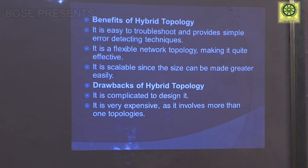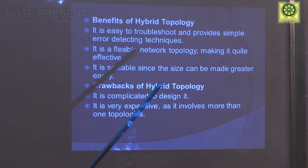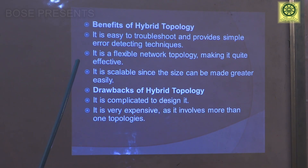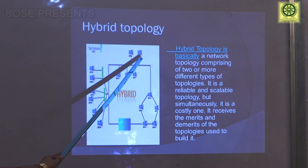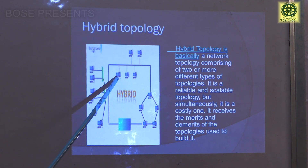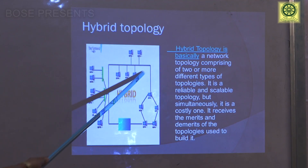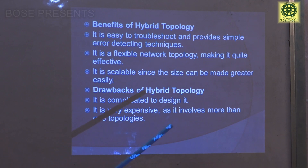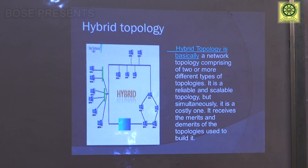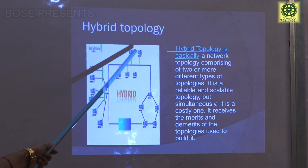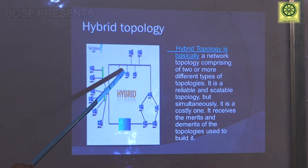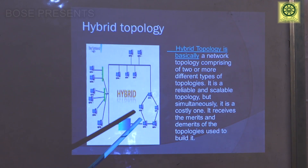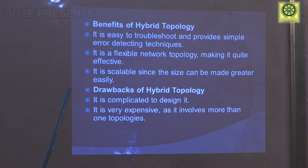The benefits of hybrid topology: it is very easy to troubleshoot and easy to detect errors, as all connections are different from each other. If one connection gets damaged or any error arises, it can be corrected without affecting the other connections. It is also very scalable — for example, the cost effectiveness of bus is less than ring, and ring is more cost effective than tree, giving scalable compatibility.